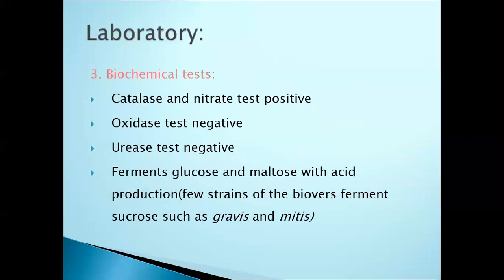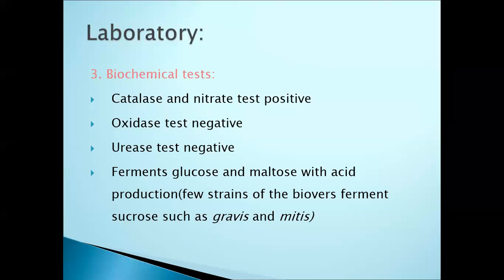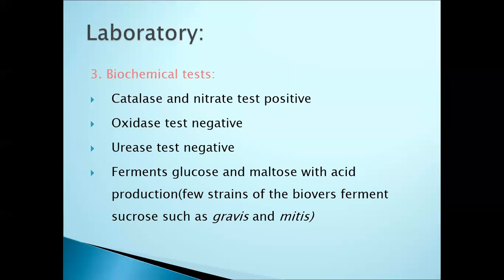Biochemical tests: the catalase test is positive, and the nitrate reduction test is positive. Urease test is negative and coagulase test is negative. Ferments glucose and maltose with acid production. Few strains ferment sucrose — the two species of Corynebacterium diphtheriae, gravis and mitis, are known as sucrose-fermenting organisms.